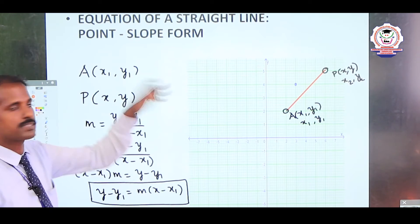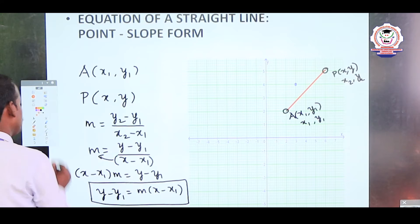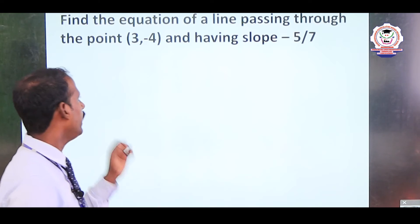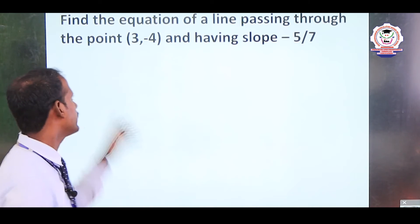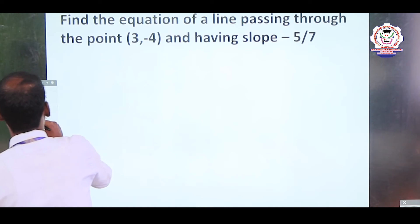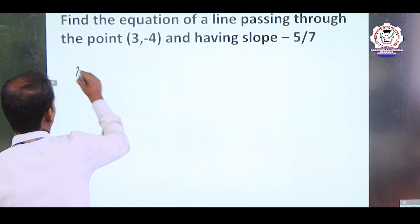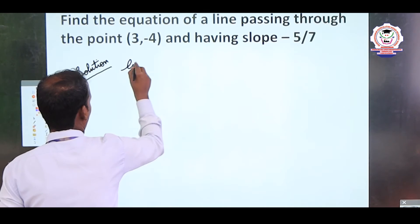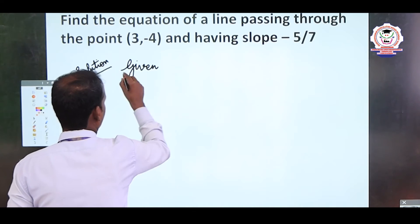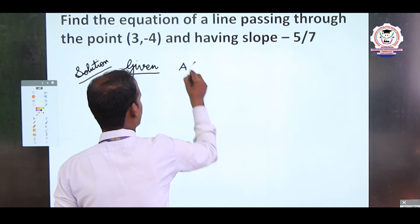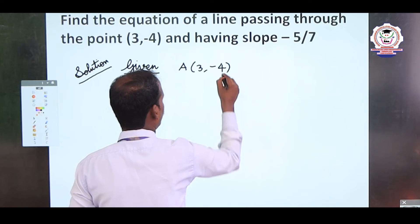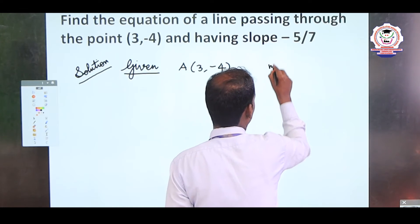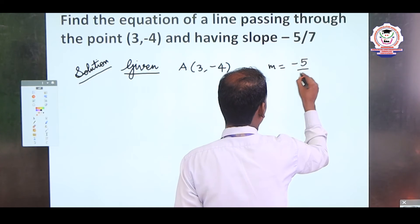Now I will explain with an example. Find the equation of a line passing through the point (3, -4) and having slope -5/7. Here the given point is (3, -4), so x1 = 3 and y1 = -4, and slope m = -5/7.